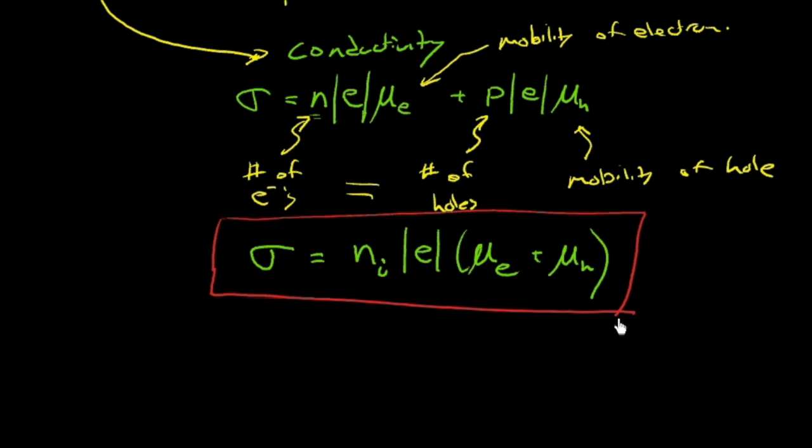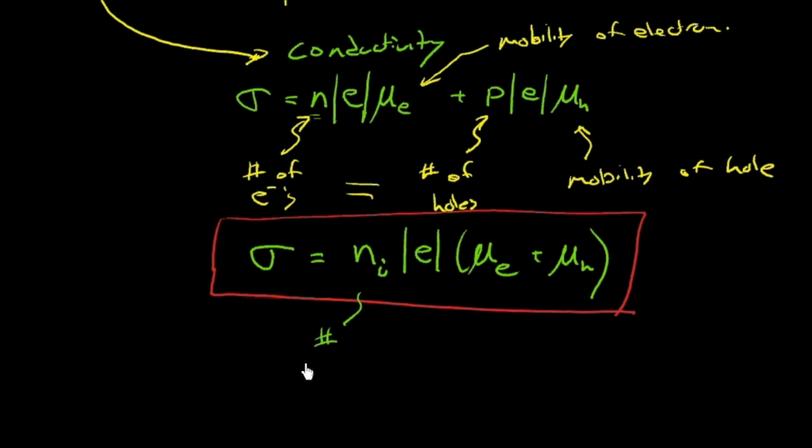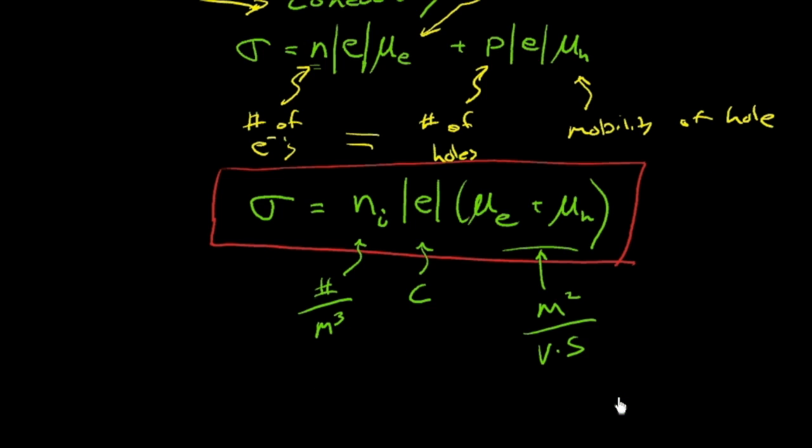That's our equation for the conductivity. And I'll just give you the units here. This is number per volume per cubic meter. This fundamental charge, of course, has units of coulombs. And mobility is going to have units of meters squared per volt second. And remember, volt is a joule per coulomb. All right, so that's an intrinsic semiconductor.